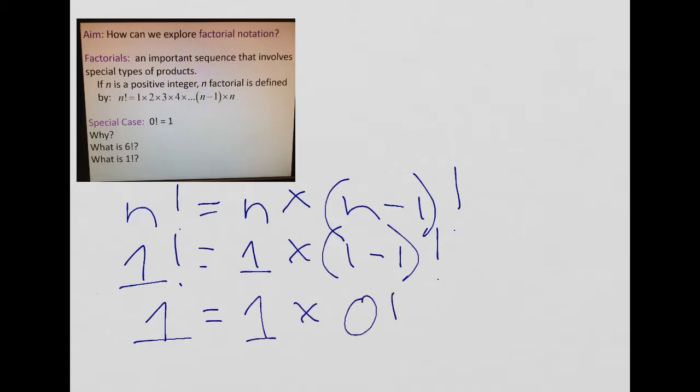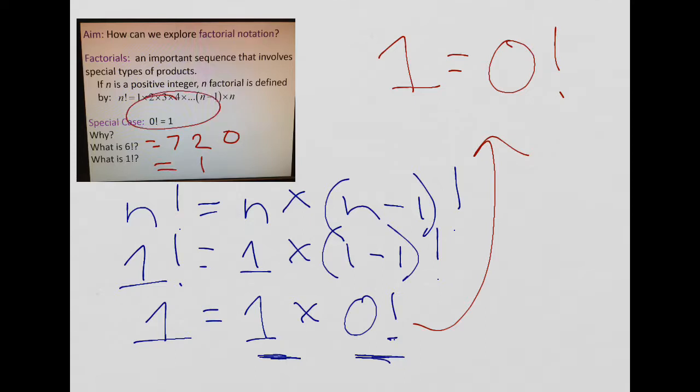If n factorial is n times the quantity n minus 1 factorial, and we're trying to prove 0 factorial, let's talk about 1 factorial. This is 1 that we know the answer to. That is 1. So, 1 factorial is going to be 1 times 1 minus 1 factorial, which is 0 factorial. Well, we know that any number times 1 is going to be itself. So, this brings us to the fact that 1 is equal to 0 factorial. So, 6 factorial may be 720, 1 factorial may be 1, but 0 factorial is also 1. You don't have to prove it, but you do have to know it.